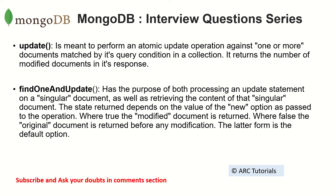The response returned by update is the number of modified documents, whereas findOneAndUpdate will update only a single document and it will return the response of that document. So if the document was modified, it will return the updated value.